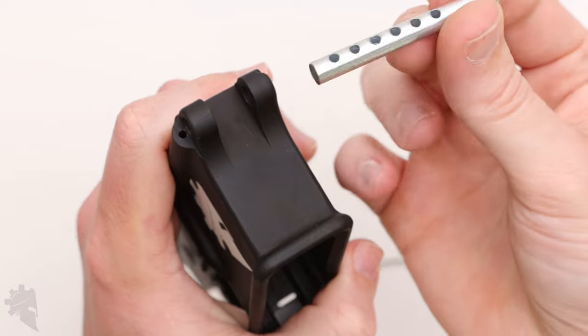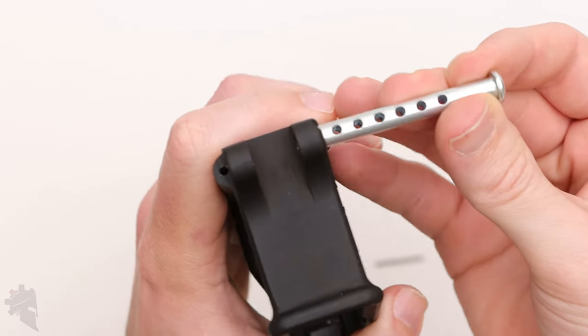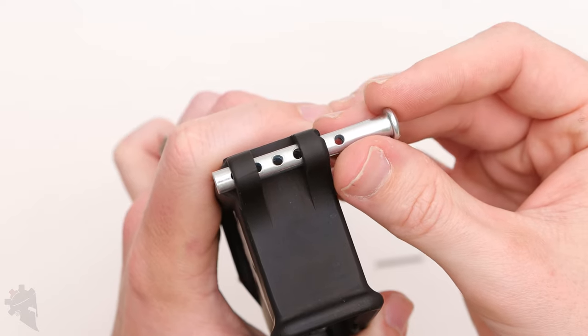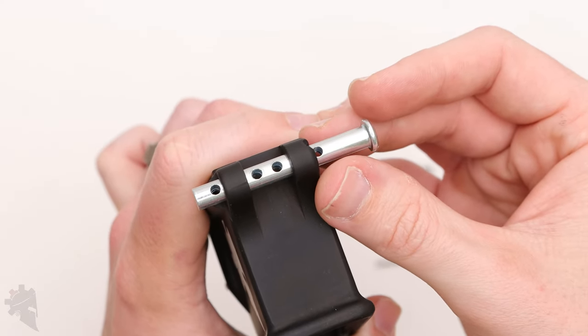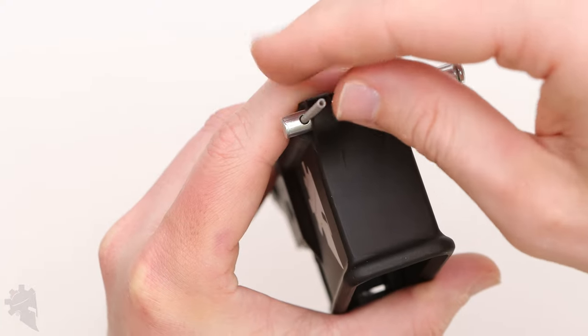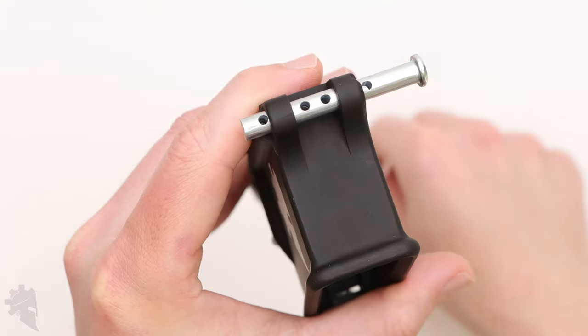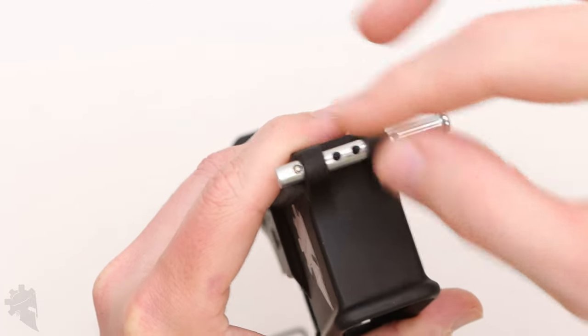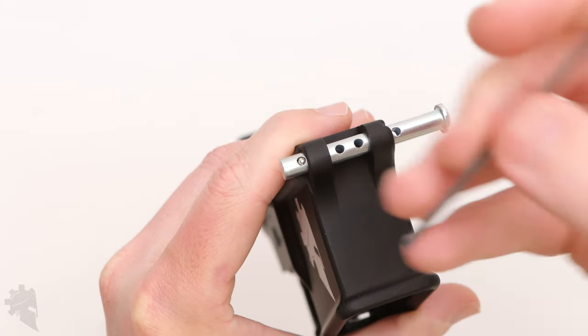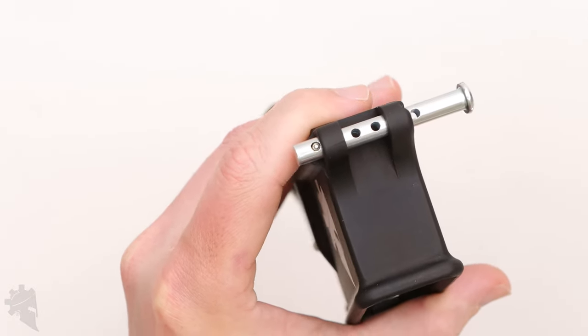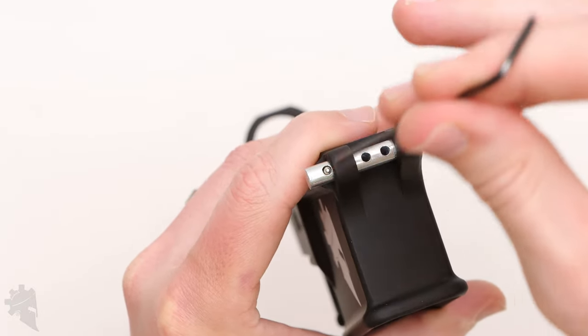How to do this. Take your clevis pin, insert it from the right so that one of the holes in the clevis pin directly aligns with the hole in the receiver. Drop your spring in, drop your detent in, and then grab, in this case I'm going to just use an Allen wrench, grab a pin, a punch, Allen wrench, whatever that fits into that hole.